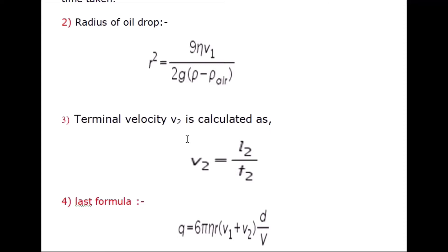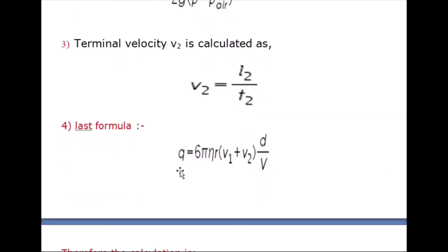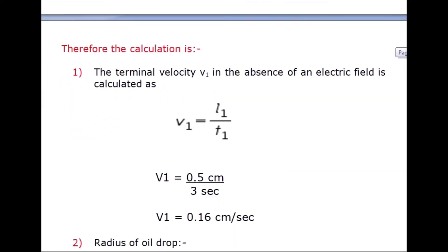First we calculate terminal velocity v1 for the downward direction — that is, in the absence of an electric field. Then we calculate terminal velocity v2 for the upward direction when the electric field is applied. When the electric field is applied, the oil drops become charged and move upward. We calculate v2 as length divided by time. Finally, the formula for charge on oil drops is: q = 6π·η·r·(v1 + v2)·d / V, where r is the radius of the oil drop, d is the plate distance, and V is the voltage.